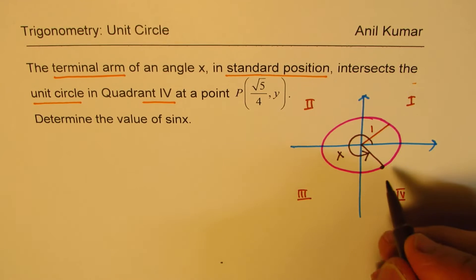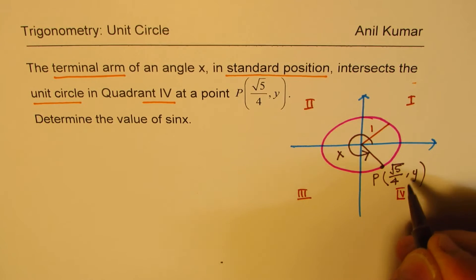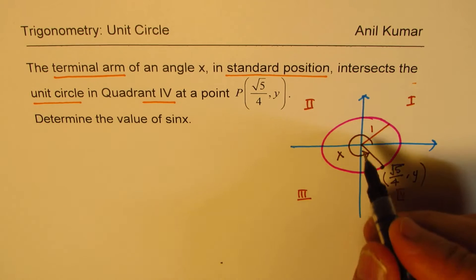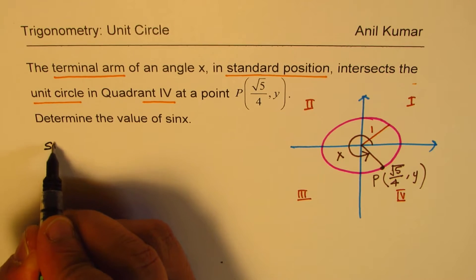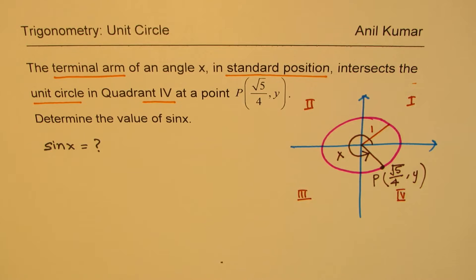Now this particular point P is given to you as square root of 5 over 4, Y. This is what is given to you. You need to find sin of X. How will you find sin X? That is what you need to find. So I hope the question is clear.